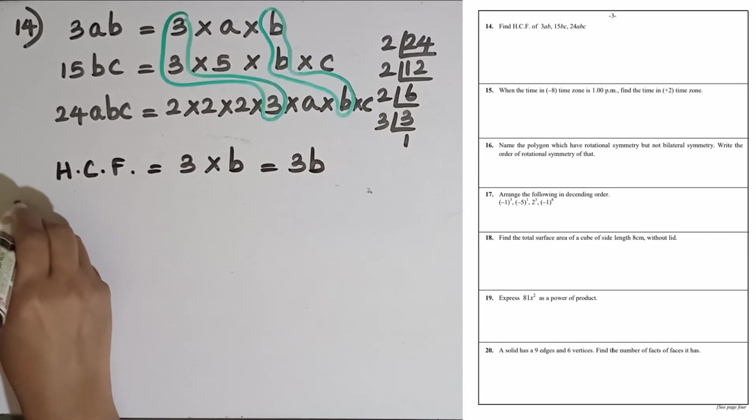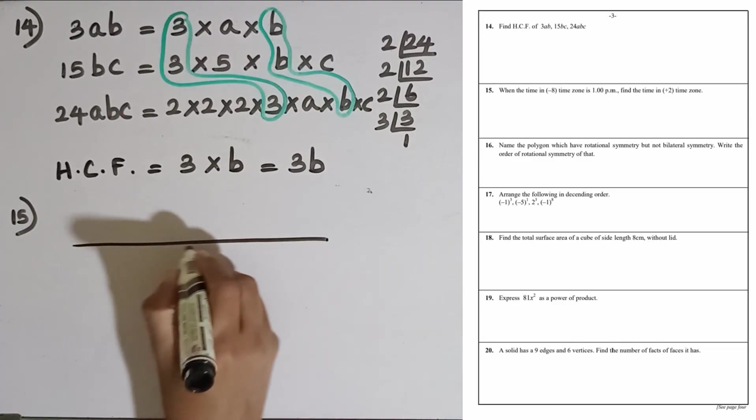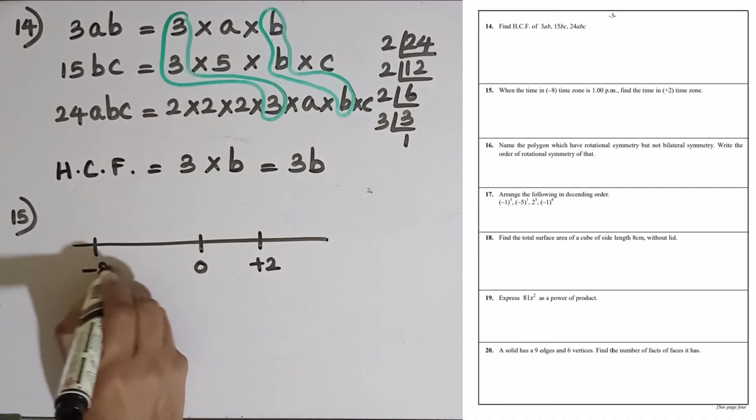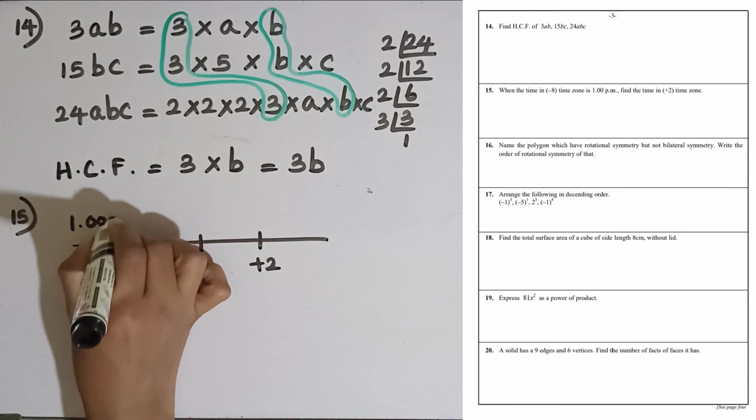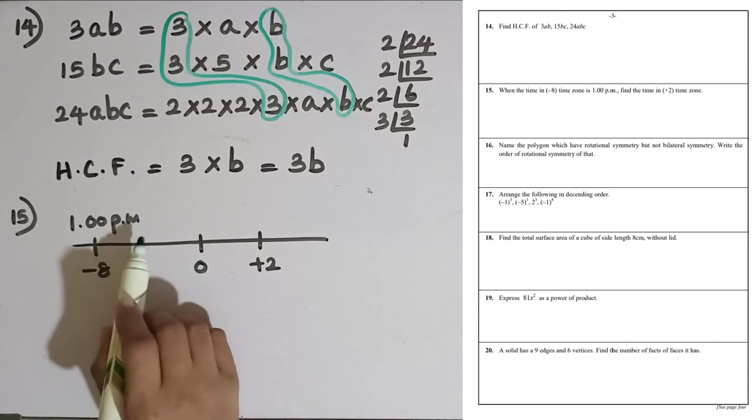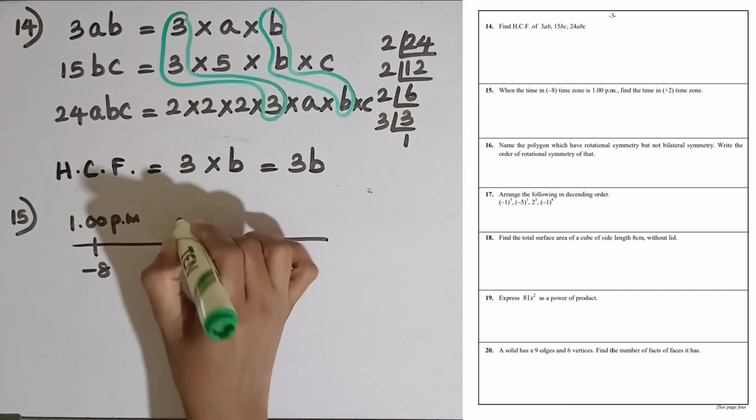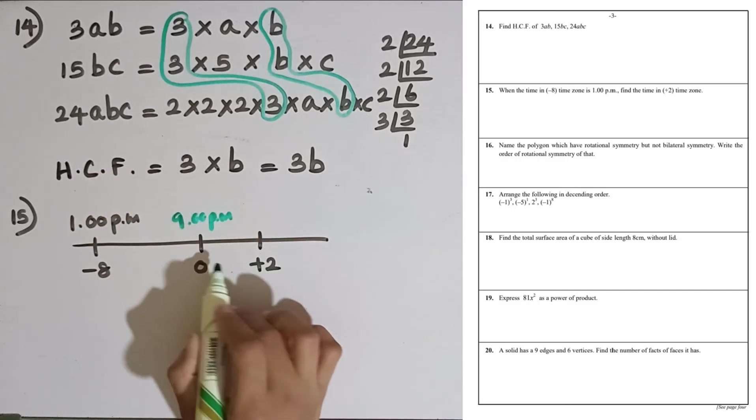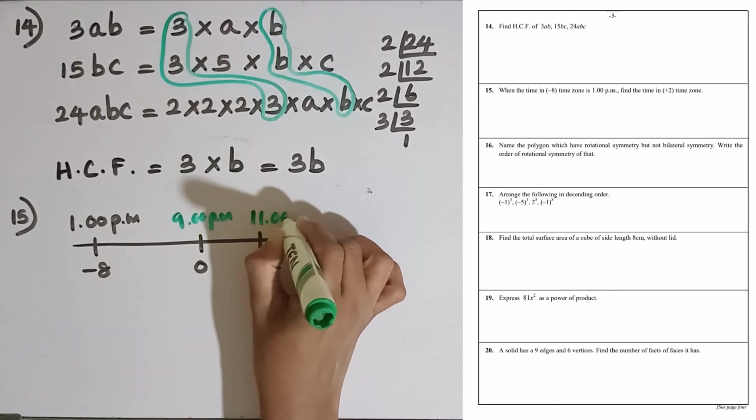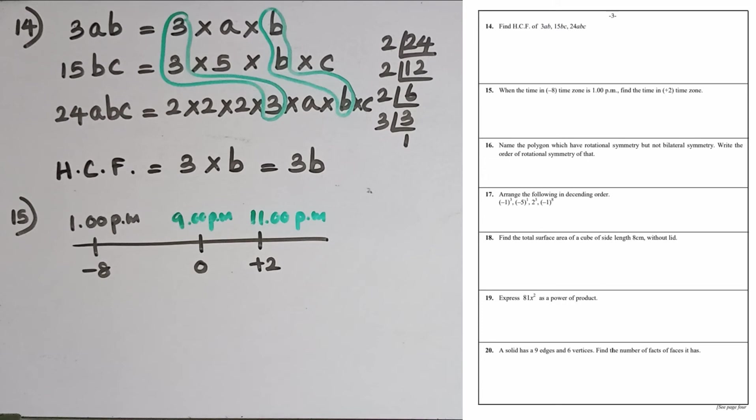Question number 15: When the time at minus 8 timezone is 1 p.m., find the time at plus 2 timezone. I will draw a rough diagram. This is 0 timezone, this is plus 2 and this is minus 8. At minus 8, the time is 1 p.m. To take the time at 0 timezone, we have to add 8 hours to 1 p.m. 1 plus 8 is 9, so 9 p.m. Then to take the time at plus 2 timezone, we have to add another 2, that is 11. 11 p.m. is the answer.